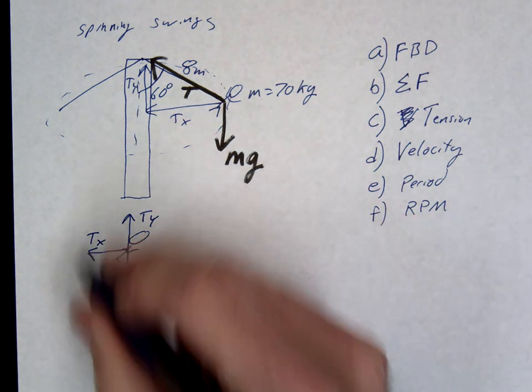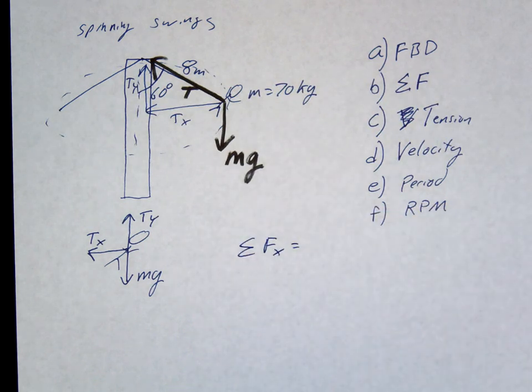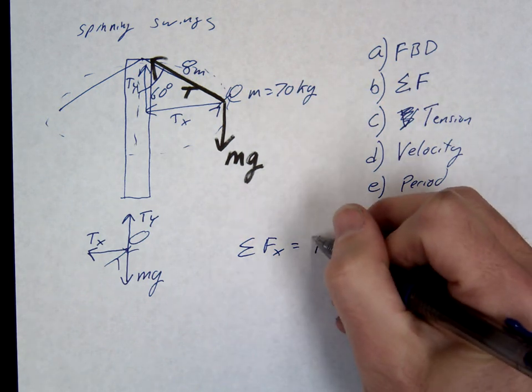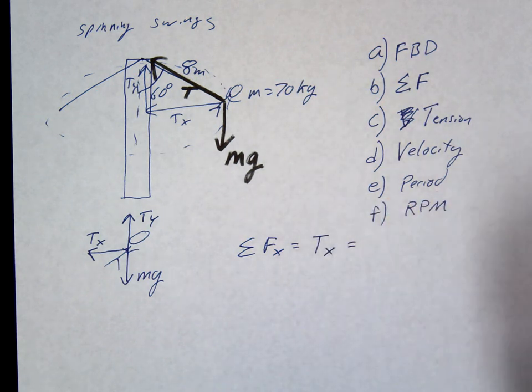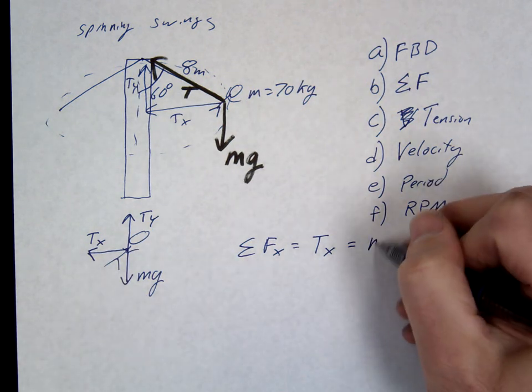All right, once you have this, it should be pretty easy now to set up our equations. So in the x direction, we only have one force. That's our Tx. So we'll write Tx equals, and we said this is keeping us in the circle, so this will be Mac.